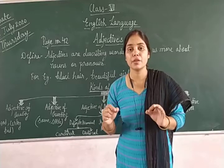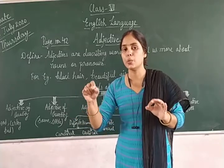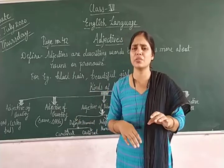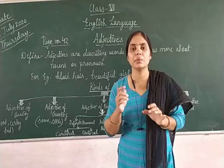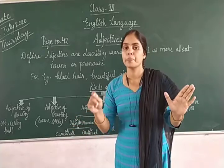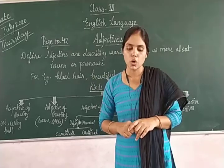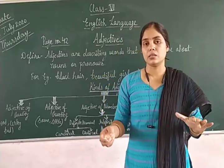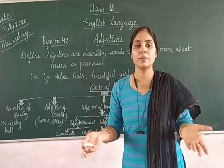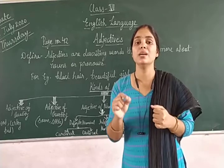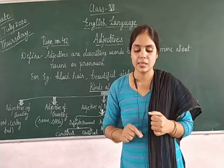If we say 'few children', we can count them but we do not know the exact number. We know that few children are there, but we do not know the exact number. Similarly, 'several places' — there are many places but we do not know the exact number, so we say several places.